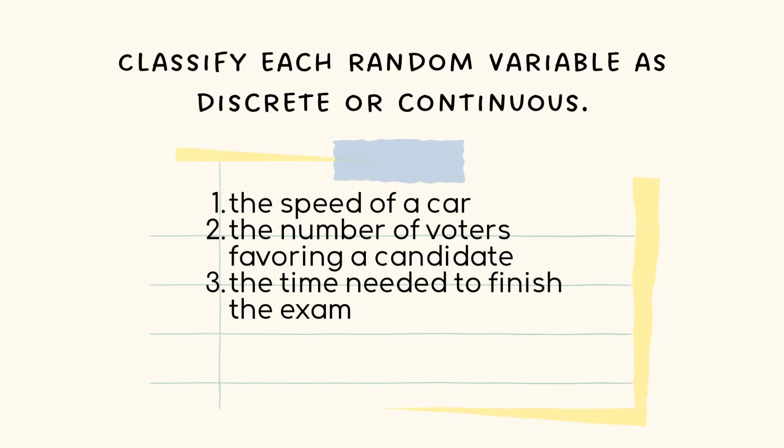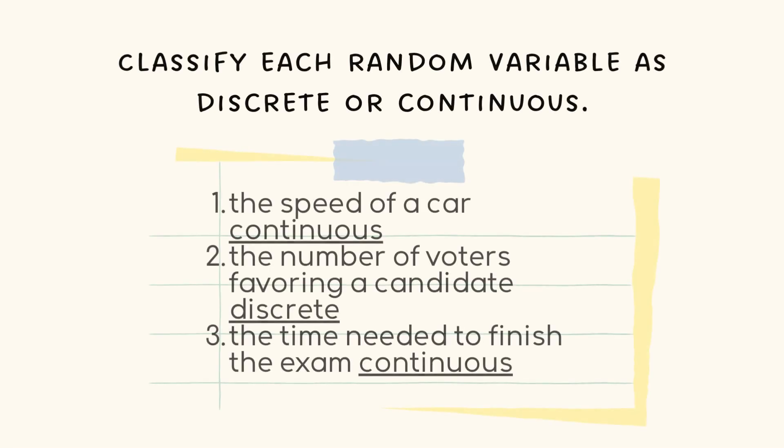Last three: the speed of a car, number of voters favoring a candidate, the time needed to finish the exam. The answers: the speed of a car is continuous because you can only assume the speed of a car. The number of voters favoring a candidate is discrete because you can count that. And the time needed to finish the exam is also continuous because you can only assume that.